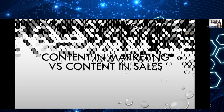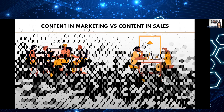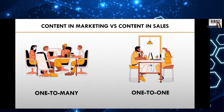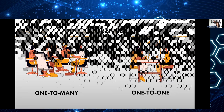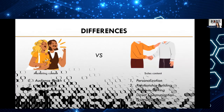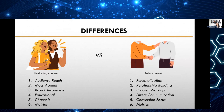Content in marketing is distributed as one-to-many, while content in sales is distributed as one-to-one. The whole strategy, the whole language that we use, everything needs to be tailored to our target audience. One of the many things which are different between content in marketing and content in sales is how they serve different goals.